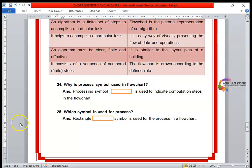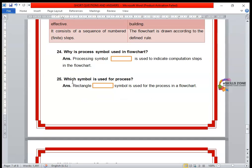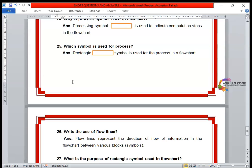Next question, number 24. Why is process symbol used in the flowchart? The answer is: processing symbol is used to indicate computation steps in the flowchart. Next question, number 25, which symbol is used for processing? The answer is: the rectangle symbol is used for the process in a flowchart.